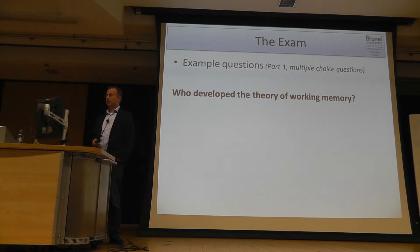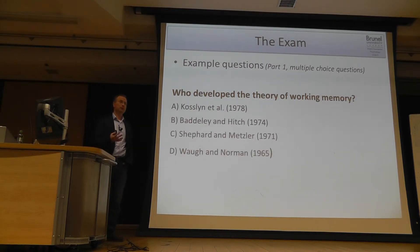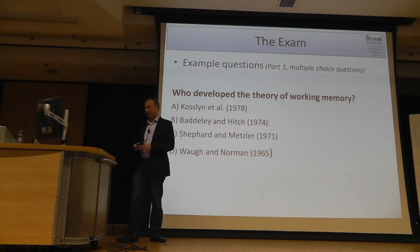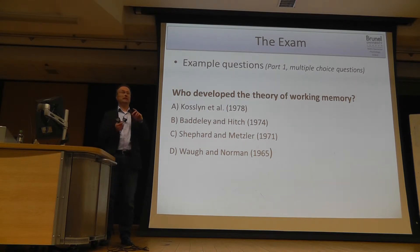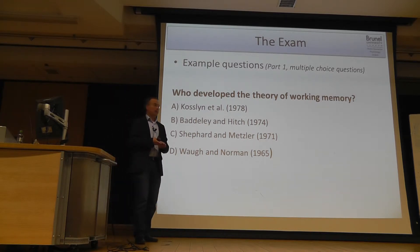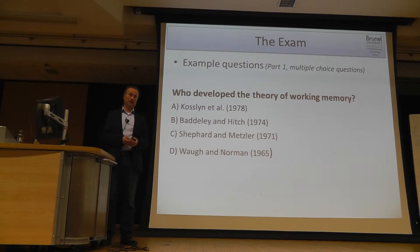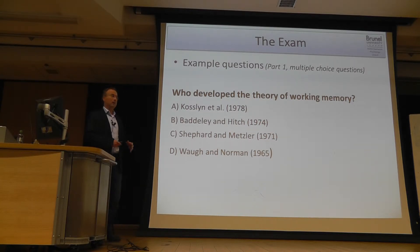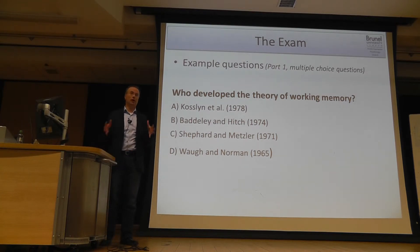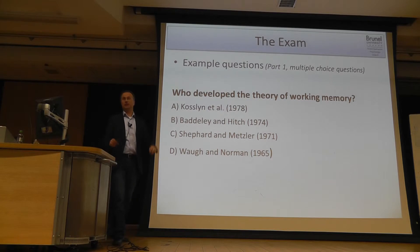Another example is: who developed the theory of working memory? I pick that question because often there are questions about how much will be asked about years, names, and particular studies. In general, there won't be too much on that. There may be questions on very central theories, and those will be usually about names. There won't be a question like in which year was this theory proposed. In this case, Baddeley and Hitch developed the theory of working memory, which is one of the most central theories in cognitive psychology. So these are a few names you need to know.